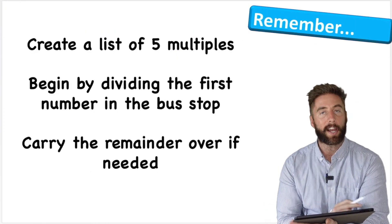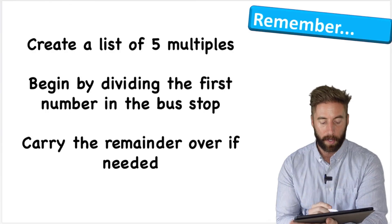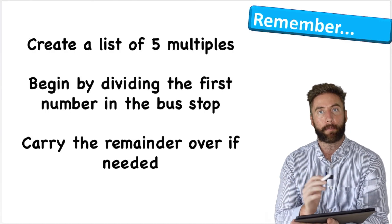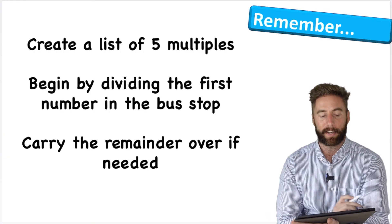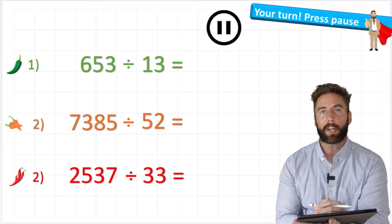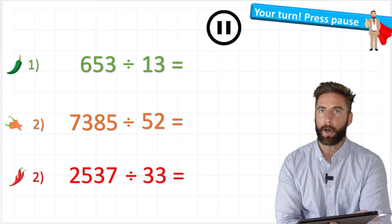Let's look at the things to remember. First, create a list of 5 multiples will really help you. Begin by dividing the first number in the bus stop and then carry the remainders along if needed. Here are 3 questions for you to have a little look at. Put your answer in the comments section. I'm going to try and mark every single one.